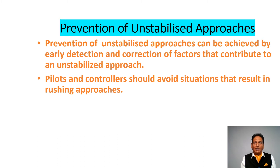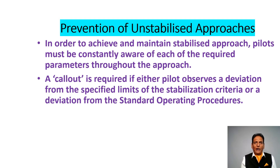Prevention of unstabilized approaches can be achieved by early detection and correction of the factors that contribute to an unstabilized approach. Pilots and controllers should avoid situations that result in rushed approaches. In order to achieve and maintain a stabilized approach, pilots must be constantly aware of each of the required parameters throughout the approach. A callout is required if either pilot observes a deviation from the specified limits of the stabilization criteria or a deviation from the standard operating procedures.